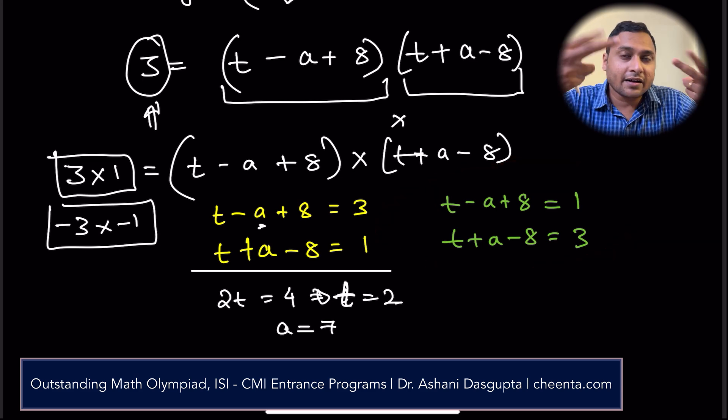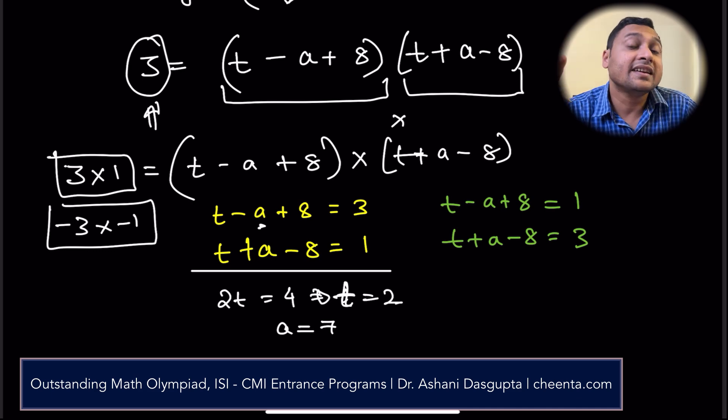For each of these equations, there are four pairs of equations. You can find out a and t in each of the cases. And you have to only select the natural numbers. Here is the challenge question. Can you find the natural numbers a for which the solutions exist?